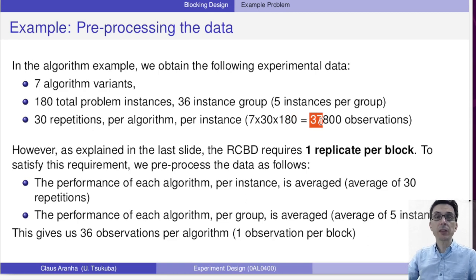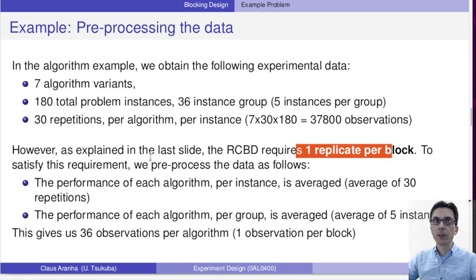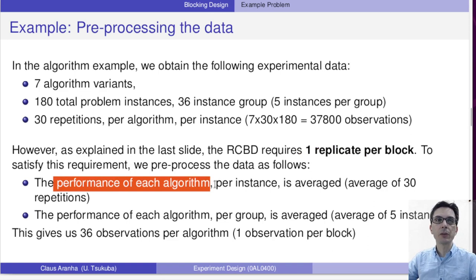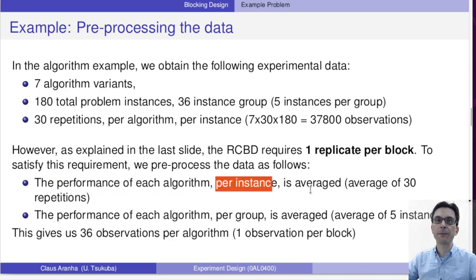First, because we are using a block design, the block design requires one replicate per block. So to satisfy this requirement, we're going to do an aggregation of the data. The performance of each algorithm per problem is averaged. So instead of using the 30 repetitions, the 30 repetitions will reduce the error when we average them.